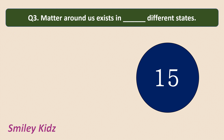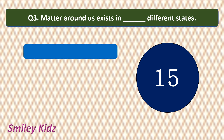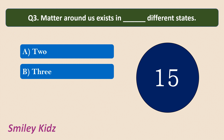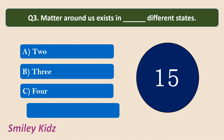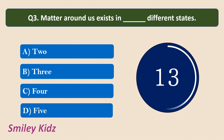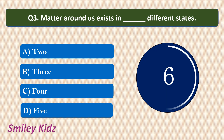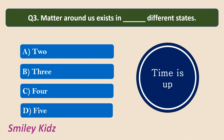Question number 3: Matter around us exists in how many different states? Options are: 2, 3, 4, 5. Your time starts now. Your time is up. The correct answer is 3. Matter around us exists in 3 different states: Solid, Liquid, and Gas.